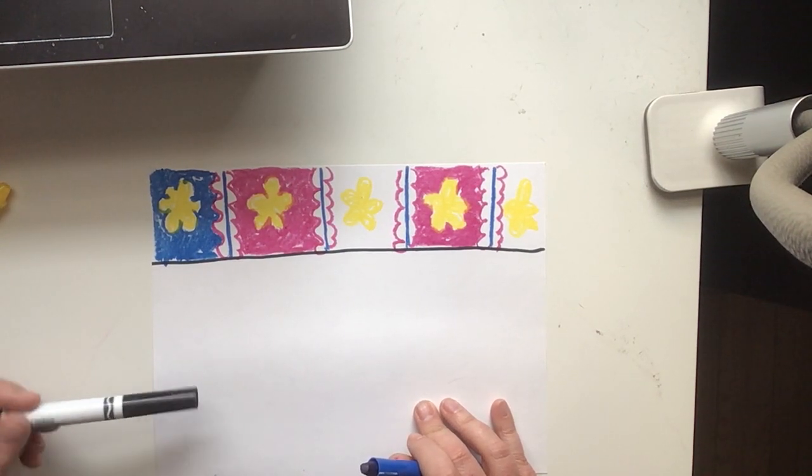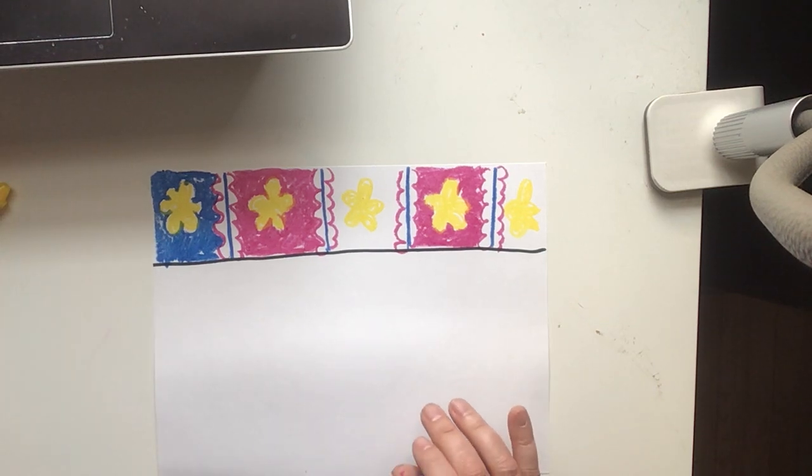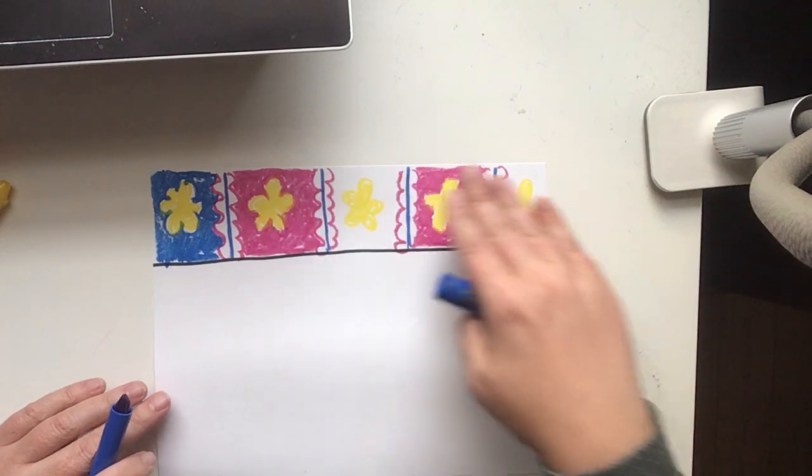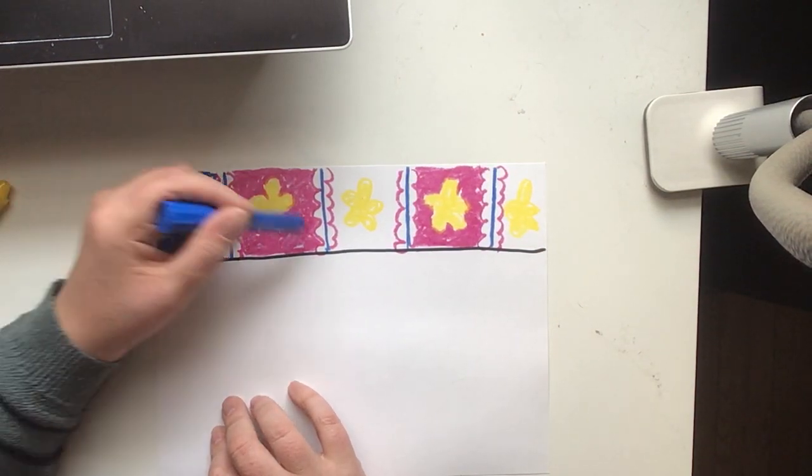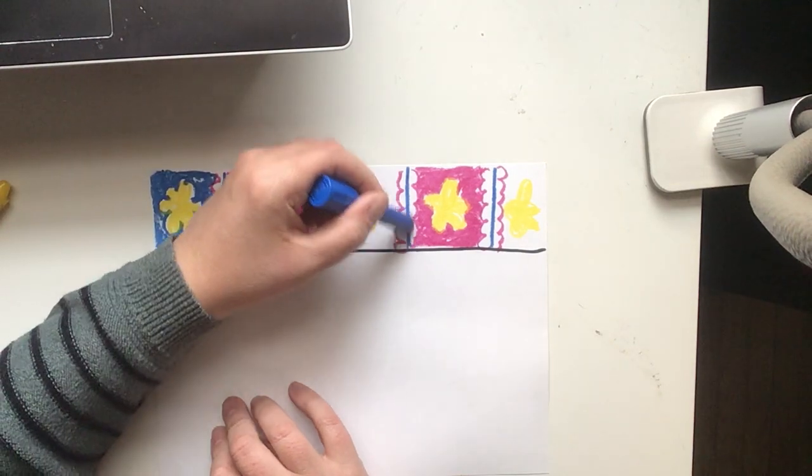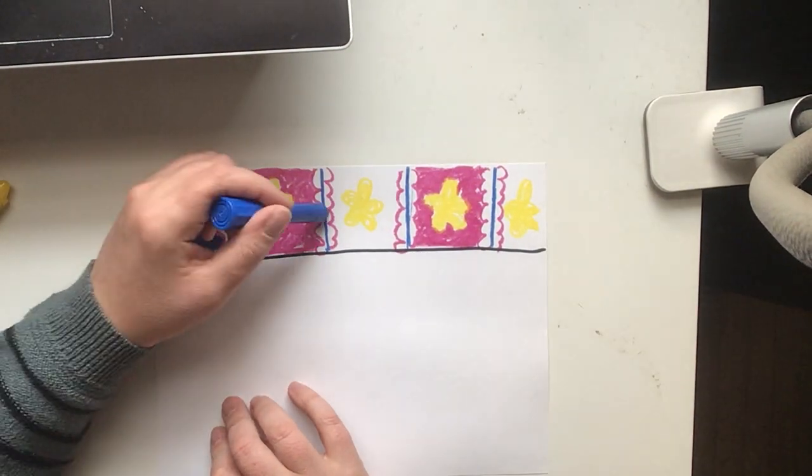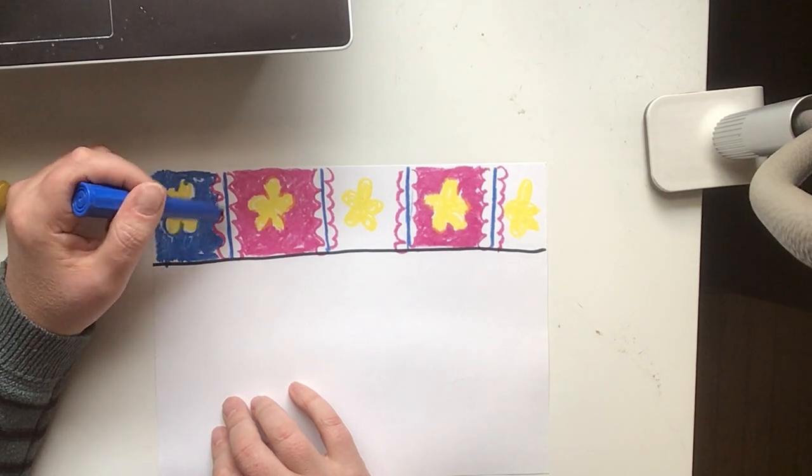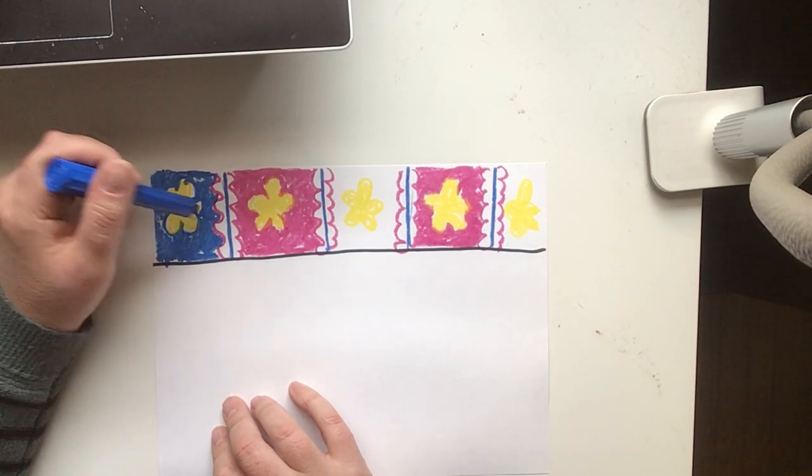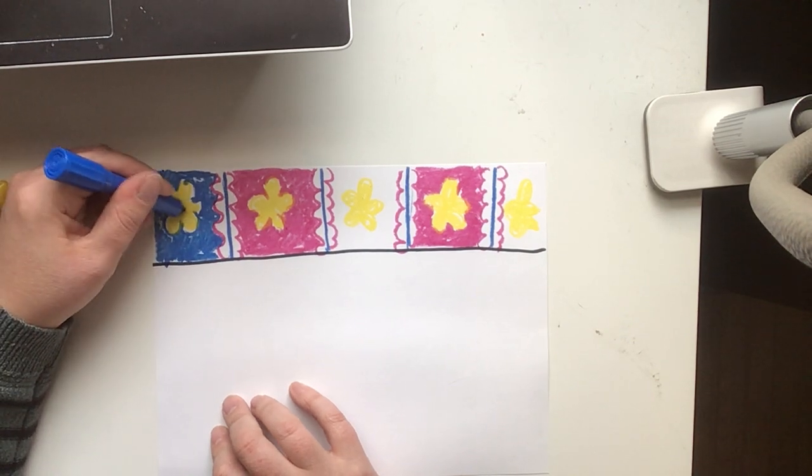Right now I'm finishing coloring the pattern I have on my wall. I'm pretending that this is wallpaper. First I made a pattern by putting lines in. A pattern is something that has to repeat, and I've got these blue lines that repeat. Then I did some purple wavy lines, and I also made a pattern by putting in yellow flowers.